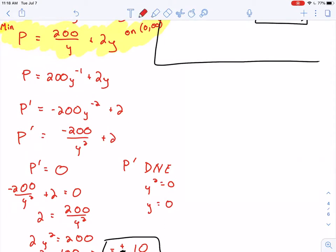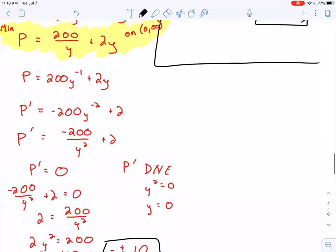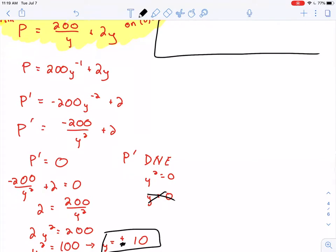We said our domain was 0 to infinity. Positive 0 to positive infinity. 0 has no sign. Not including 0, right? The parentheses right there is telling me that 0 is not included in our interval, which means that 0 cannot be a critical point. It's not in the domain. So I only have this one single critical number, which is good.